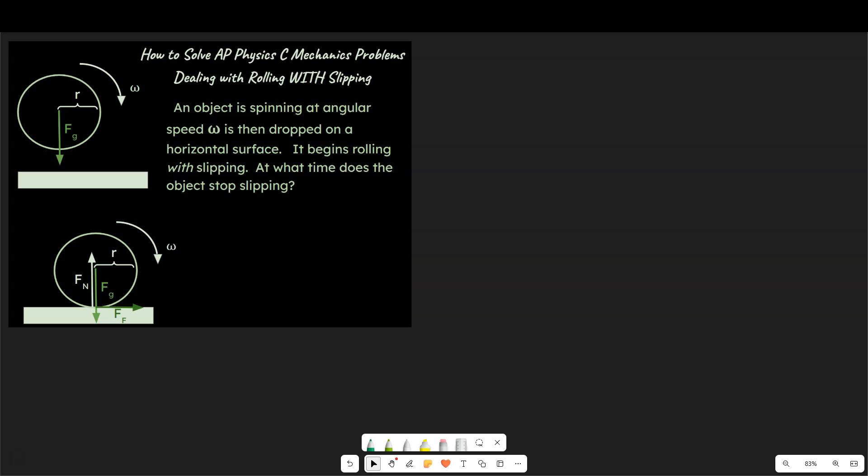Let's take a look at this problem here. The problem says an object is spinning at angular speed omega is then dropped on a horizontal surface. It begins rolling with slipping. At what time does the object stop slipping? This is your initial position, this is your final position. We're really concerned with this final position at the moment when it hits the surface and is sliding initially but it will eventually catch and roll without slipping.